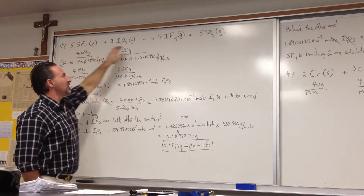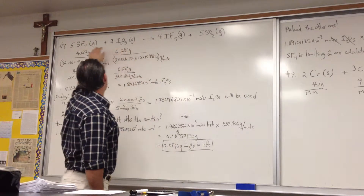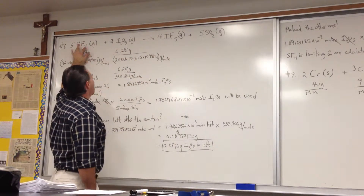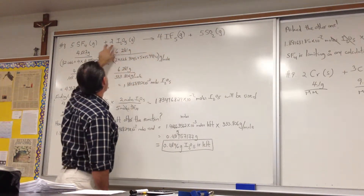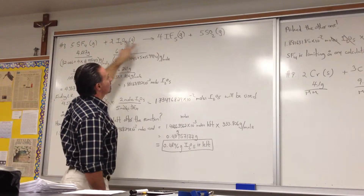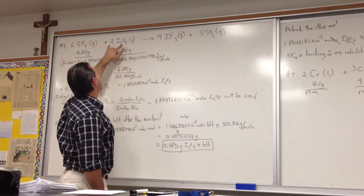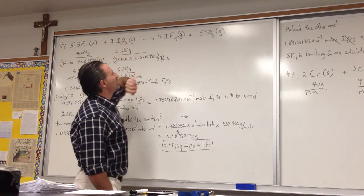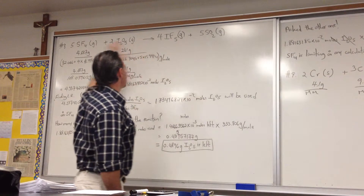Checking the balance: five sulfurs on the left, five sulfurs on the right; 20 fluorines on each side; 4 iodines; and 10 oxygens on each side.